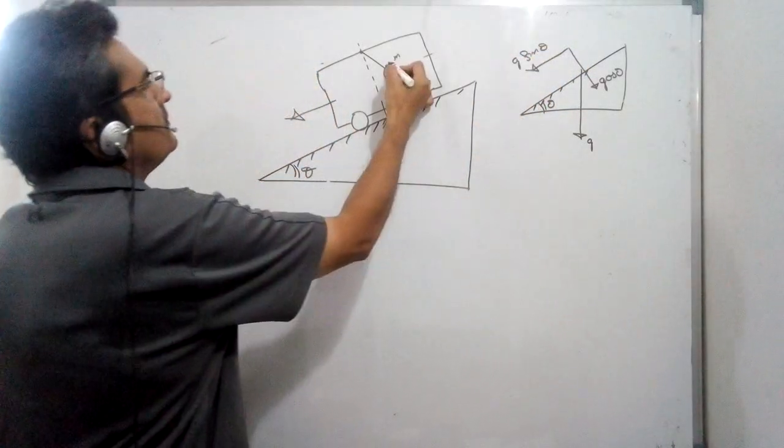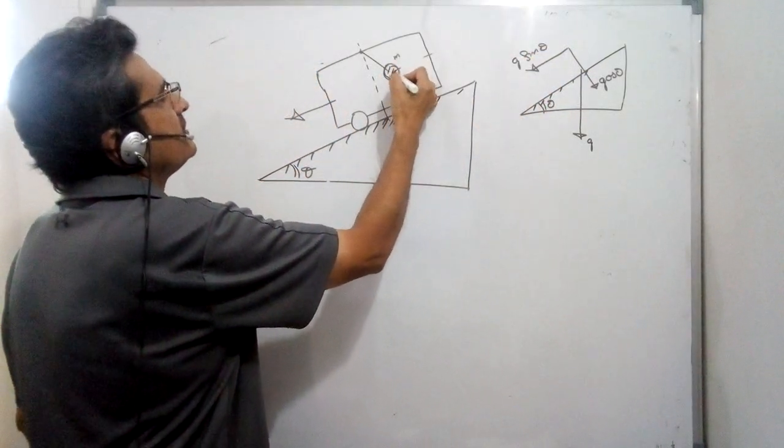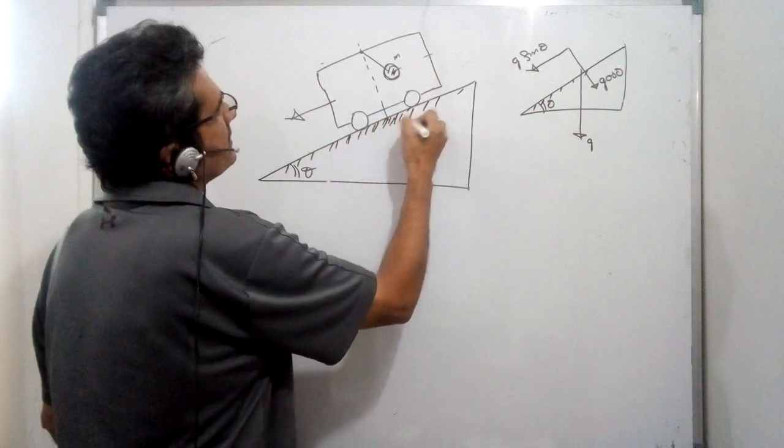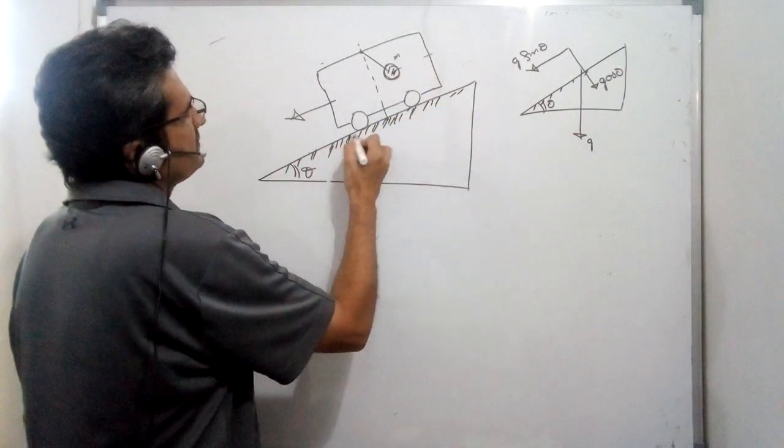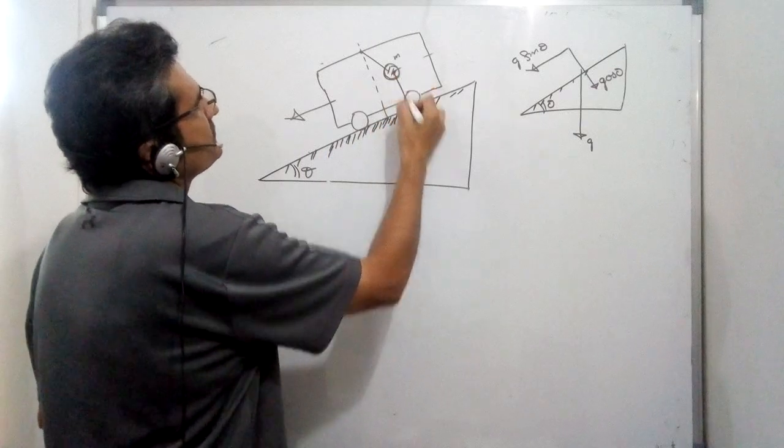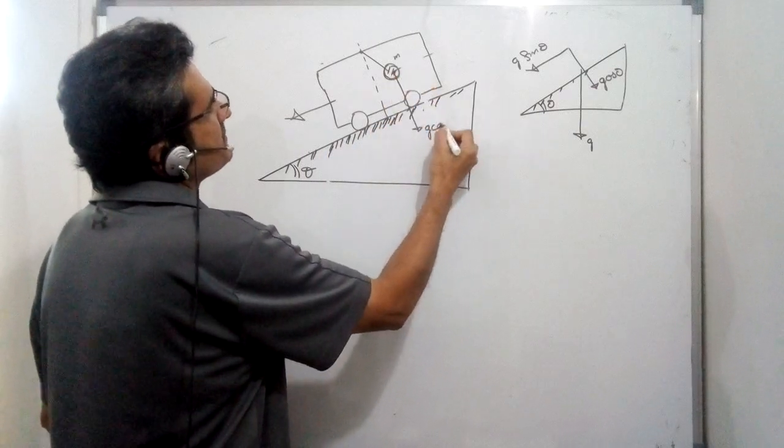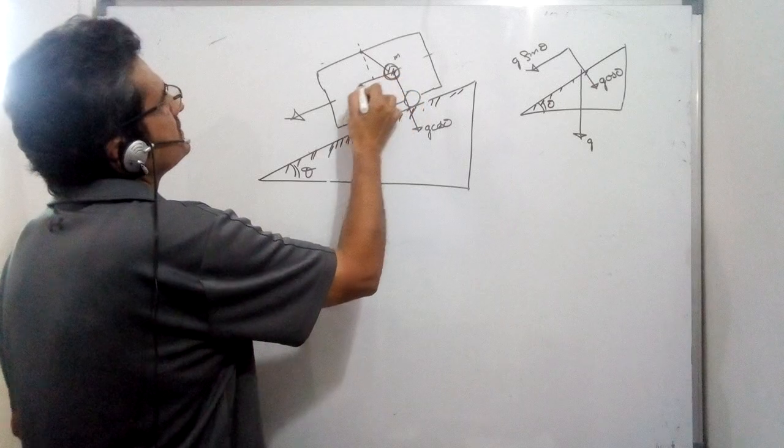So this bob, the ball of the pendulum, in reference to this frame of the inclined plane will experience G cos theta perpendicular and G sin theta horizontal.